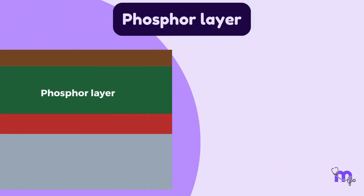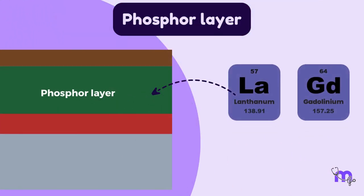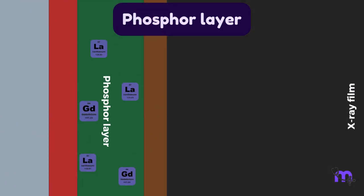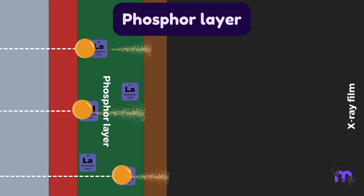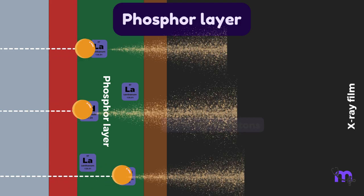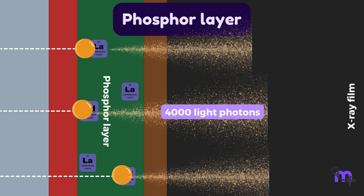Rare earth elements such as lanthanum and gadolinium are added to this layer, thereby increasing the speed of the film and decreasing patient exposure time. Are you wondering how? Well, they convert each X-ray photon to about 4000 lower energy light photons.